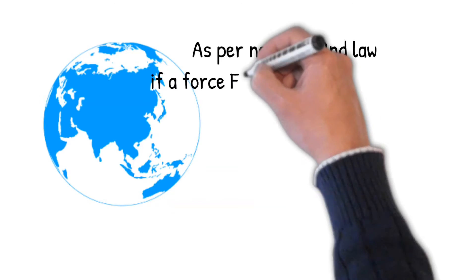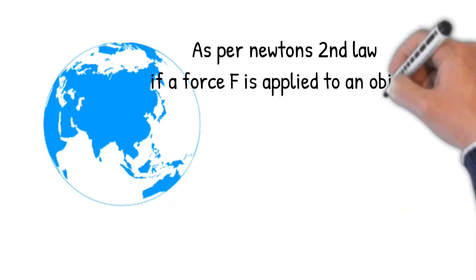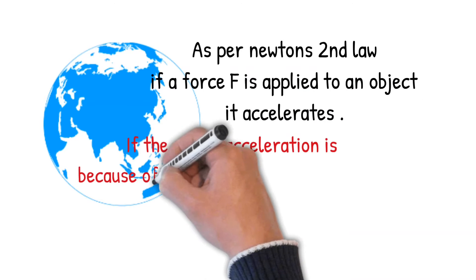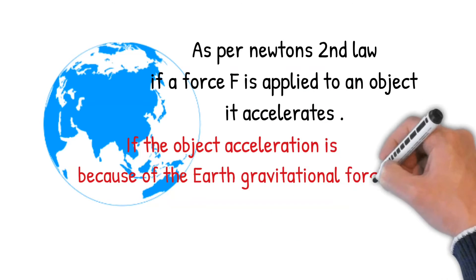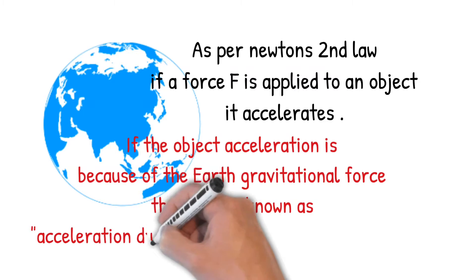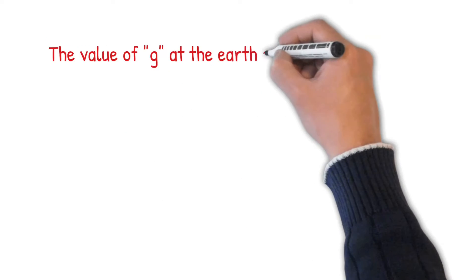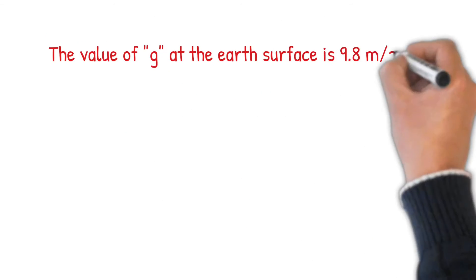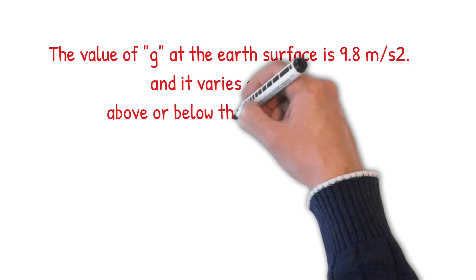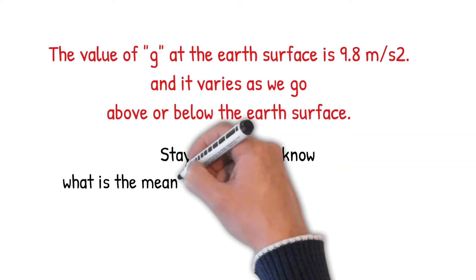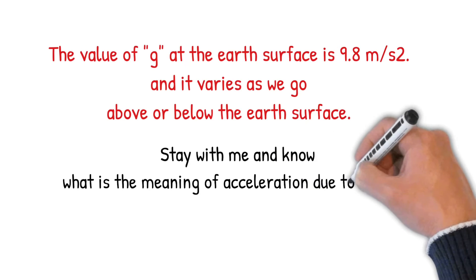As per Newton's second law, if a force F is applied to an object it accelerates. If the object's acceleration is because of the Earth's gravitational force, then that is known as acceleration due to gravity, represented by g. The value of g at the Earth's surface is 9.8 meters per second squared, and it varies as we go above or below the Earth's surface.